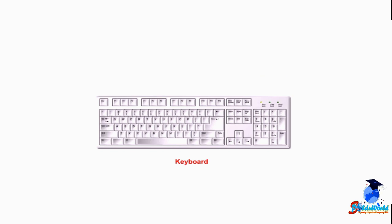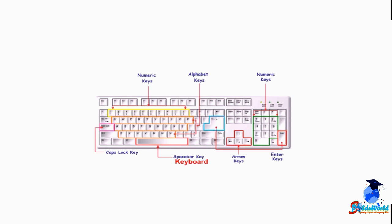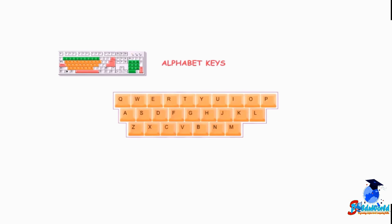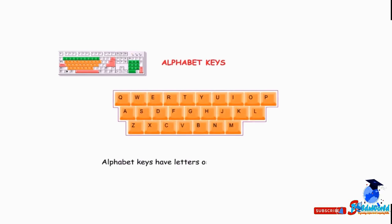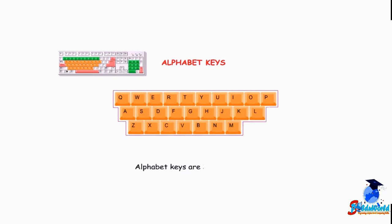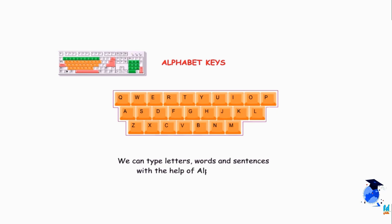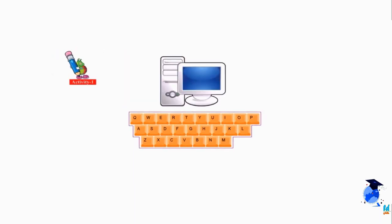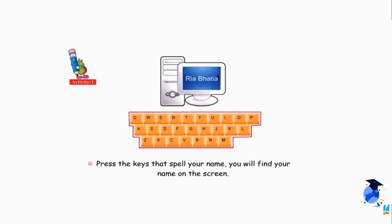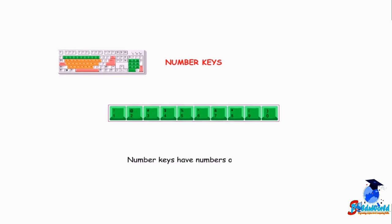Hello students, today we will learn about the keyboard and its special keys. A keyboard is an important part of a computer. It has many keys used to type letters, numbers and symbols. Let us first talk about the alphabet keys — they have letters from A to Z but are not given in alphabetical order. There are 26 alphabet keys. We can type letters, words and sentences with their help. Number keys have numbers on them — 10 keys, from 0 to 9.